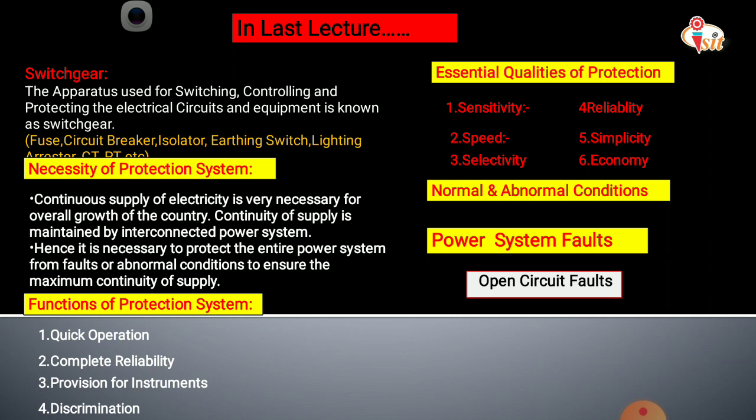The fourth quality is reliability — the protection system should operate under pre-determined conditions. If the protection system is reliable, then it will be very simple to handle, giving us the quality of simplicity. The last important quality is economy — the cost of the protection system should be around five percent of the total cost of the overall system.